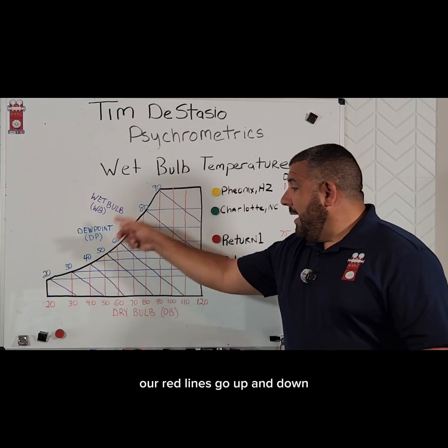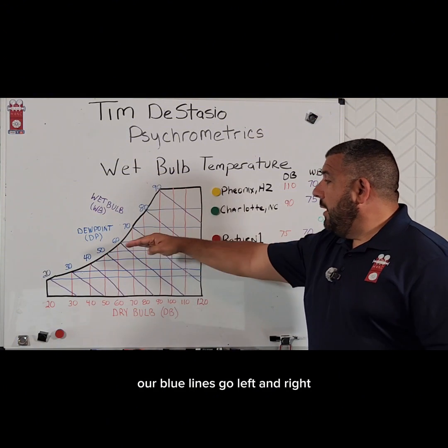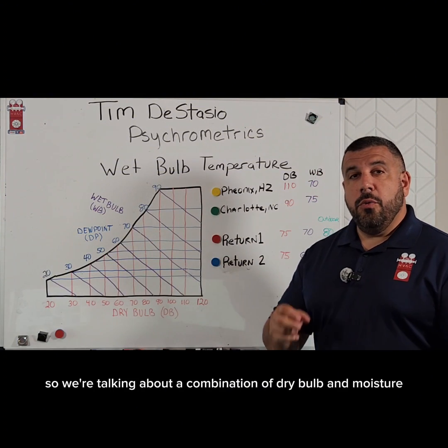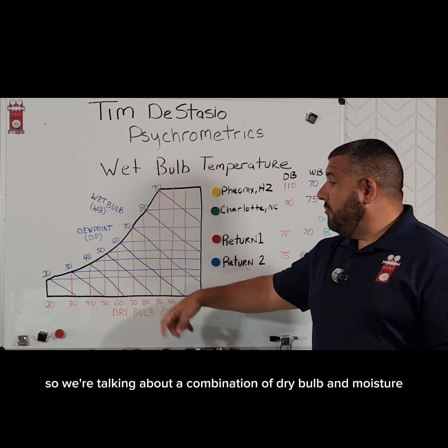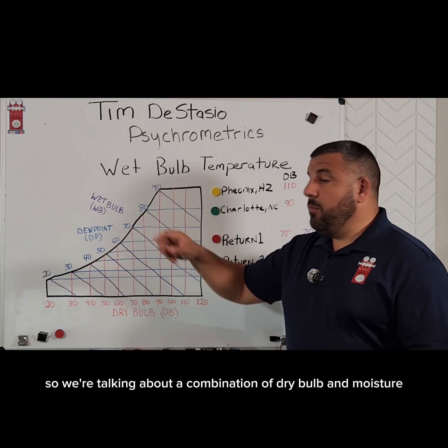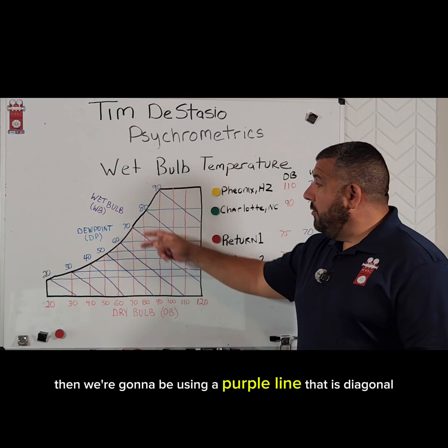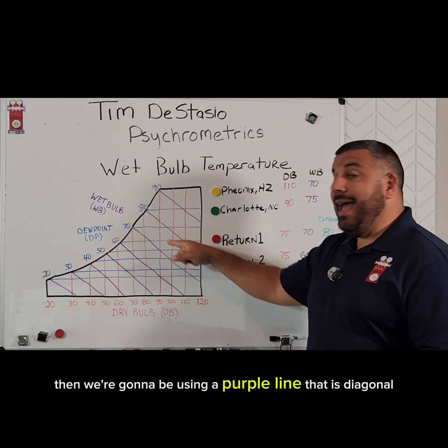Of course, our red lines go up and down. Our blue lines go left and right. So when we're talking about a combination of dry bulb and moisture, we're going to be using a purple line that is diagonal.